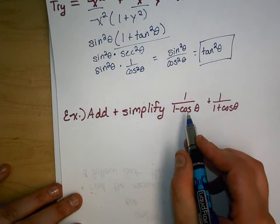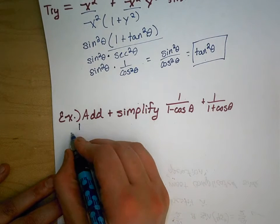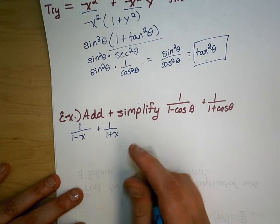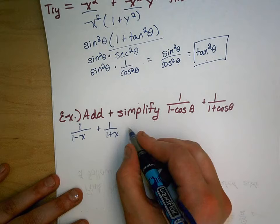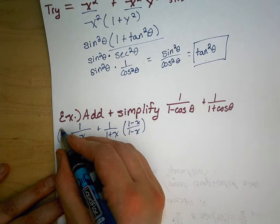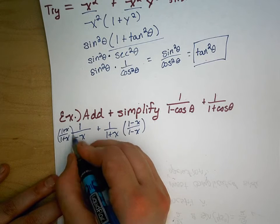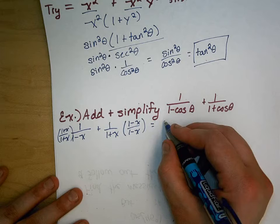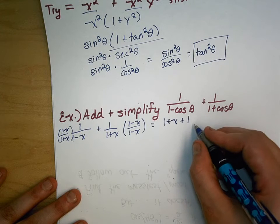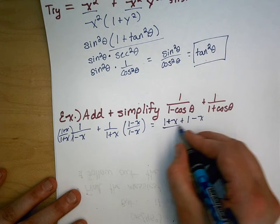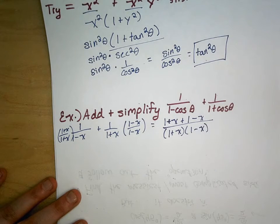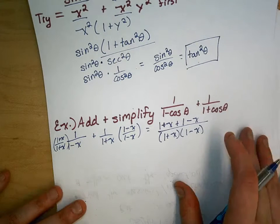So if this was instead 1 over 1 minus x plus 1 over 1 plus x, what we would do is find a common denominator — multiplying the first fraction by 1 minus x over 1 minus x, and the second by 1 plus x over 1 plus x. That would give us 1 plus x plus 1 minus x all over 1 plus x times 1 minus x, which is the same as 1 minus x squared.